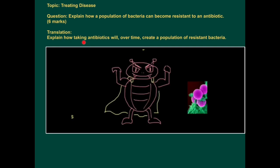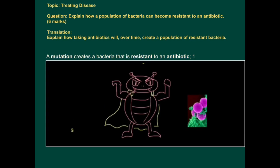In other words, explain how taking antibiotics will, over time, create a population of resistant bacteria — a very genuine threat we're facing right now. This is really a question about natural selection, so you can use the same sort of template. A mutation creates a bacteria that is resistant to an antibiotic — a super-resistant bacteria.